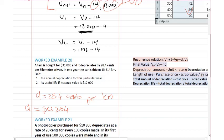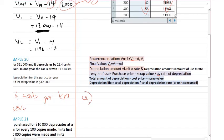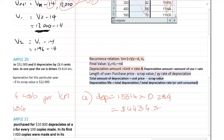So the annual depreciation for that year: in one year it's driven 15,614 km. Depreciation equals 15,614 times 0.284 — because for every km it's going to cost that much. That gives a value of $4,434.38.